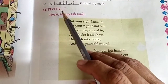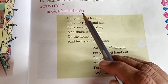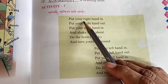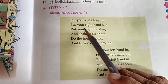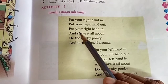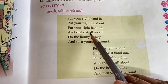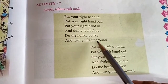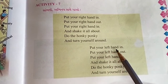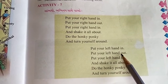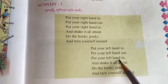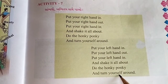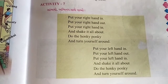Activity seven. Friends, stand up! Put your right hand in, put your right hand out, put your right hand in and shake it all about. Do the hokey pokey and turn yourself around. Put your left hand in, put your left hand out, put your left hand in and shake it all about. Do the hokey pokey and turn yourself around.